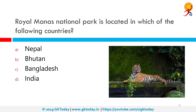Royal Manas National Park is located in which of the following countries? The correct answer is Bhutan. Royal Manas National Park in Bhutan is its oldest national park and the royal government considers it the conservation showpiece of the kingdom and the genetic depository for valuable plants.